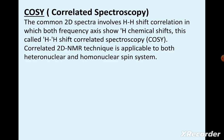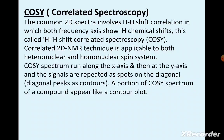The COSY spectrum runs along the x-axis and the y-axis, and signals are repeated as spots on the diagonal. The diagonal peaks appear as contours. A portion of a COSY spectrum of a compound appears like a contour plot.